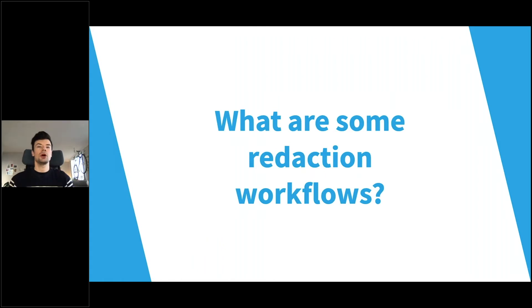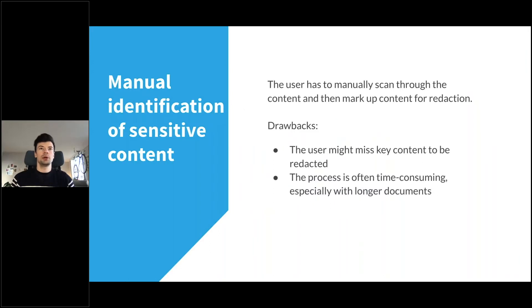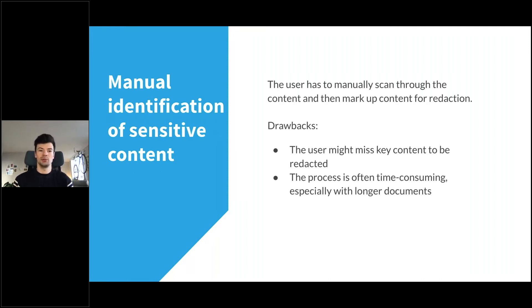What are some common redaction workflows? The most popular is that the user manually scans the document with their eyes to find content that needs to be removed. We're all human and we make errors — a user might miss key content to be redacted. The process is also very time-consuming. If you're dealing with contracts that are 50 pages long and you have 10 of them, it really adds up.